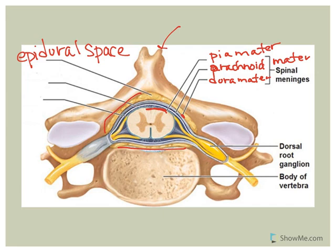Underneath the dura mater is the epidural space with its contents, then you have the arachnoid mater. Between the arachnoid mater and the dura mater, we have the subdural space, which is a potential space. Just as with the cranial meninges, you can have an epidural hematoma or a subdural hematoma associated with the spinal cord — an accumulation of blood in those spaces. Under normal conditions the subdural space doesn't exist; pressure from the cerebrospinal fluid keeps the arachnoid mater and dura mater firmly attached to each other.